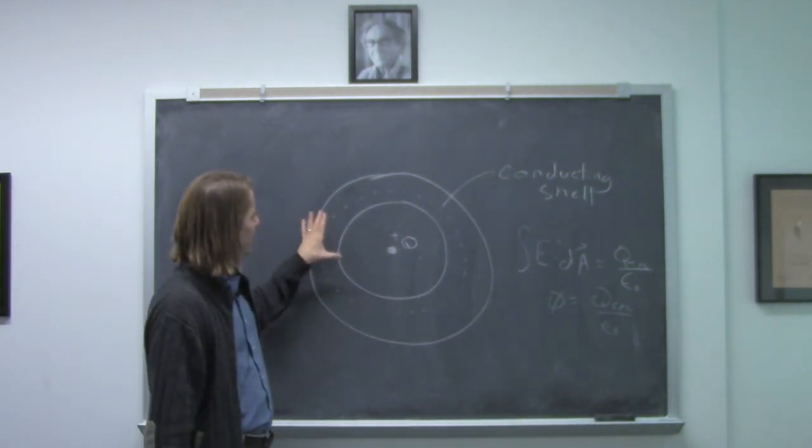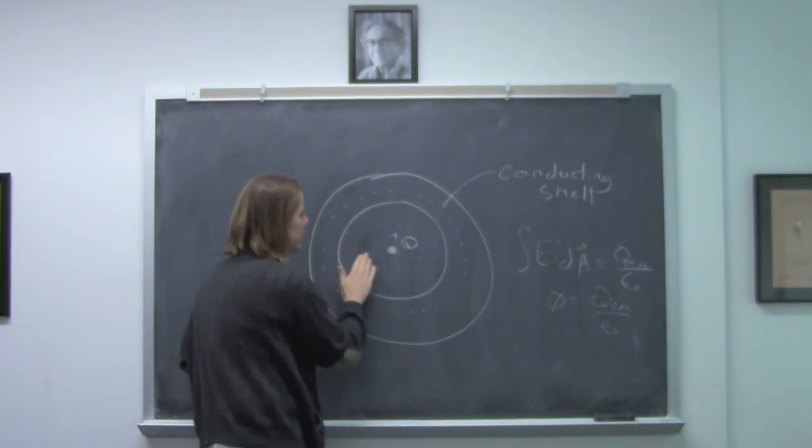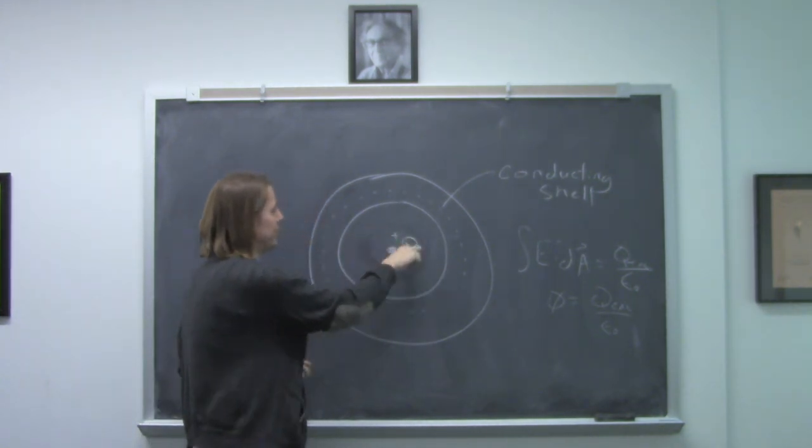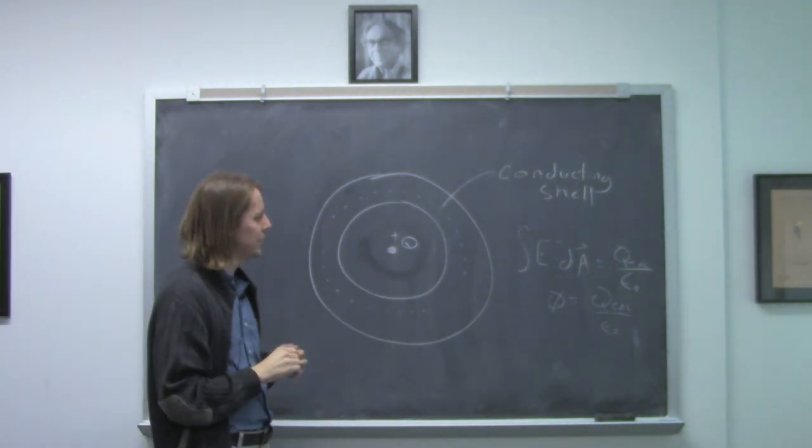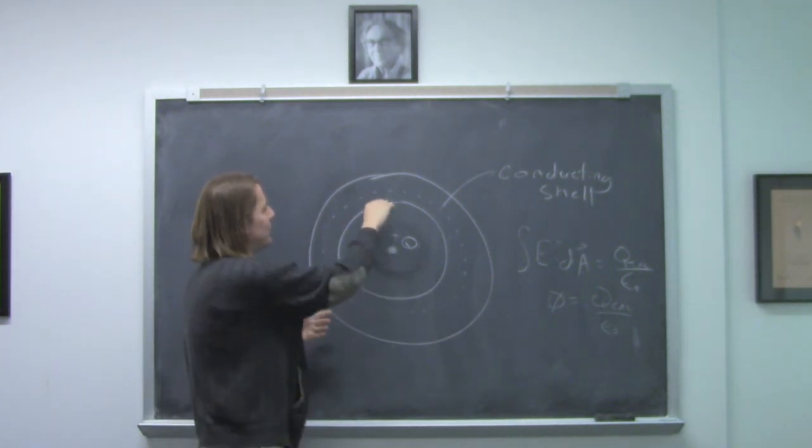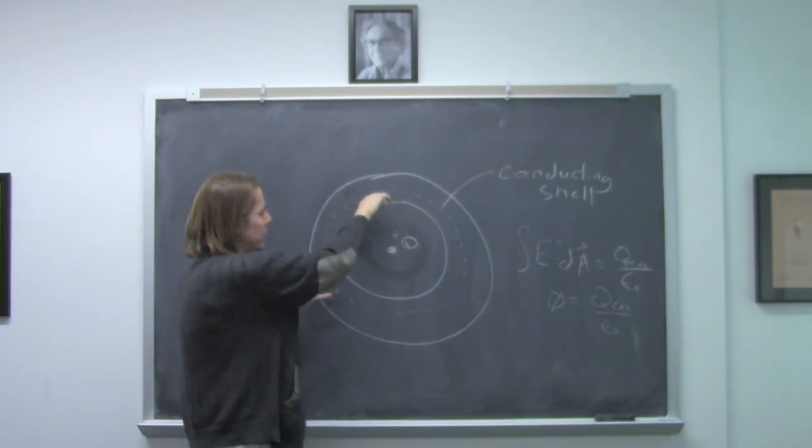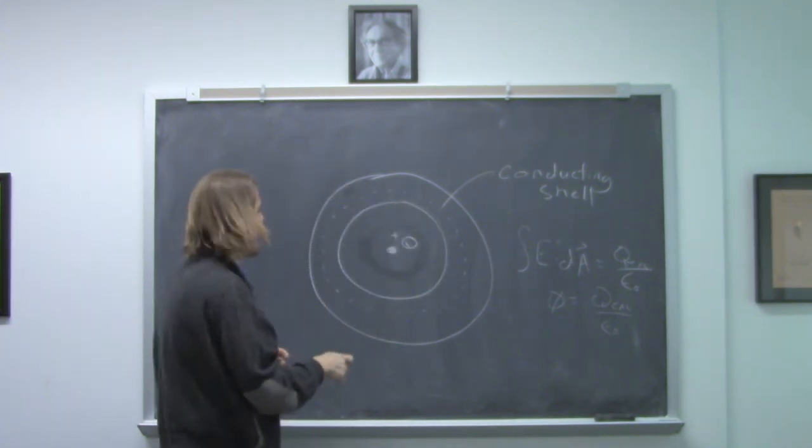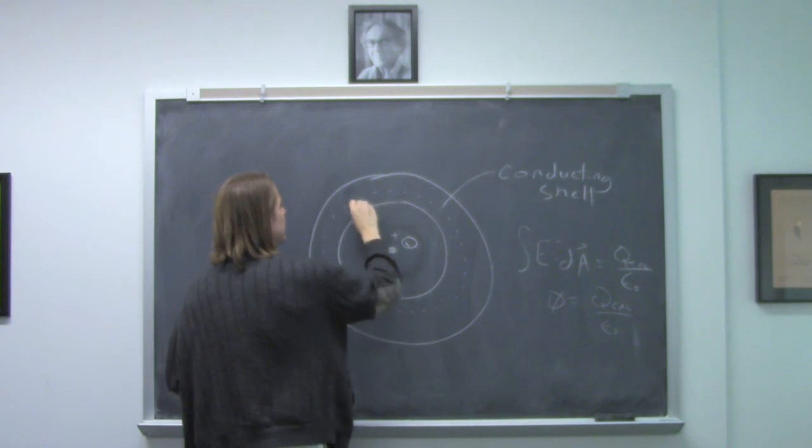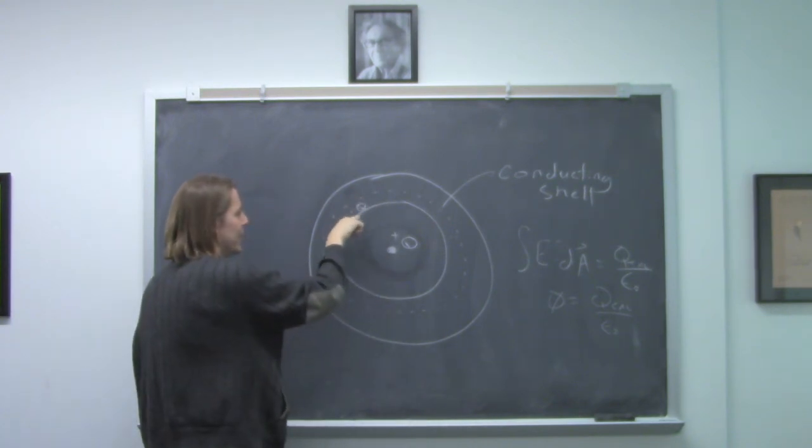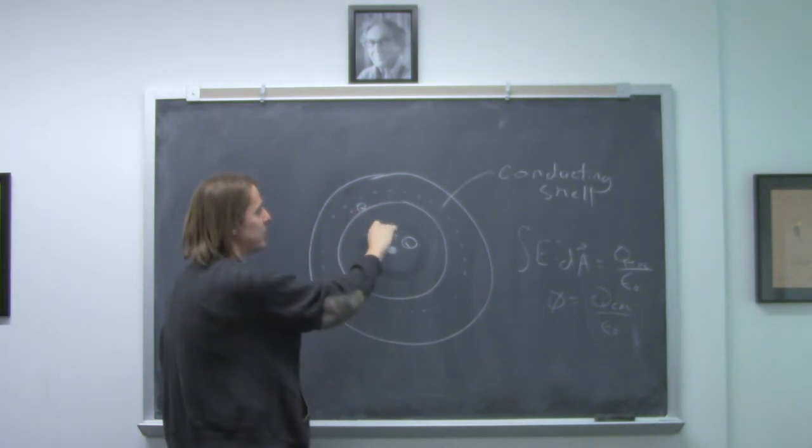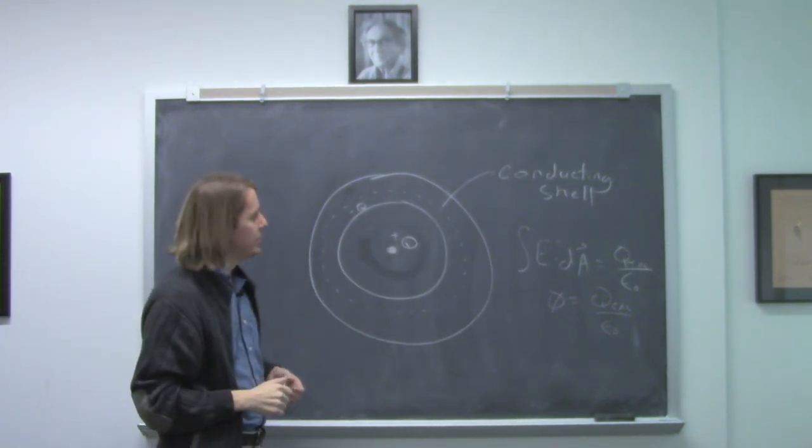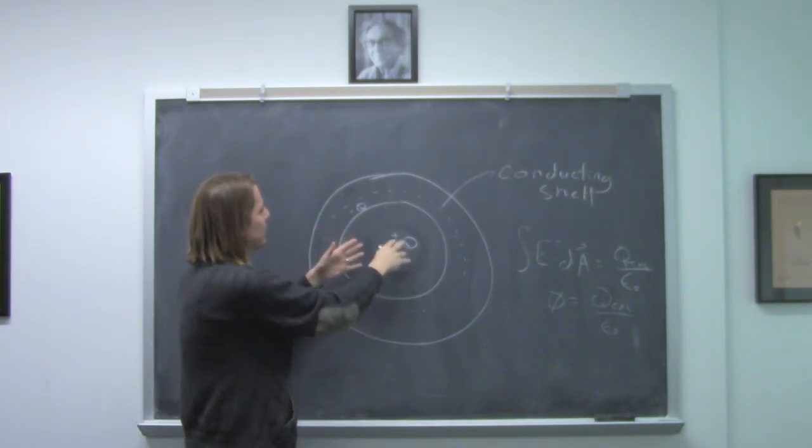Well, now we have a problem because Q enclosed is not 0. There's a positive charge in here, but we say the field has to be 0. And symmetry keeps fields from canceling out to make 0. Well, then what must happen is negative Q is attracted to this inside surface. So we have minus Q builds up here. And when I draw it there, I mean it goes all the way around. We have a total charge of minus Q distributed over the inside surface of the metal conducting shell.